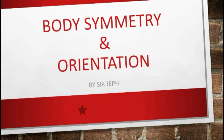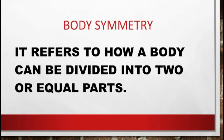The word symmetry refers to the distribution of parts of an object, body, or living thing — in other words, how a body can be divided into two equal parts. All animals except sponges exhibit either radial symmetry or bilateral symmetry. Animals without symmetry, such as sponges, are referred to as asymmetrical.